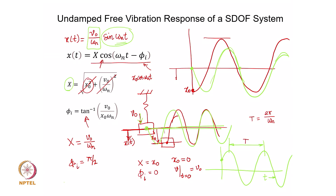If you are interested in finding out the response at any instant of time for a system perturbed from its mean position, this is the expression to use. It is completely defined when you have fully defined initial conditions x₀ and v₀. If those two conditions are known and you know your system — that is, you know k and m — then you completely know the dynamic response to initial disturbance.